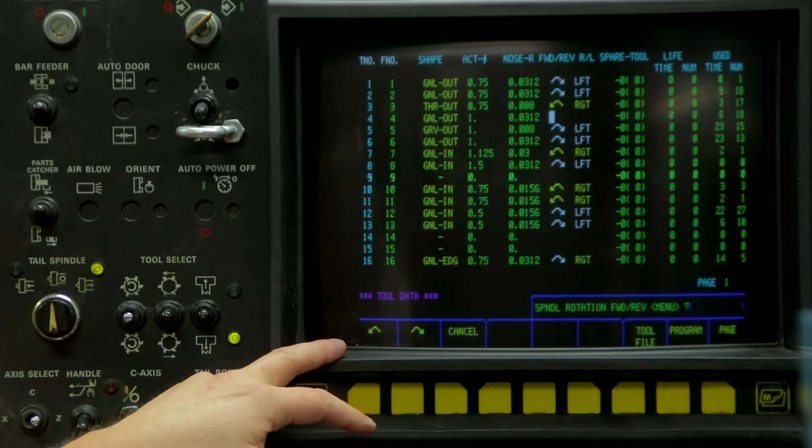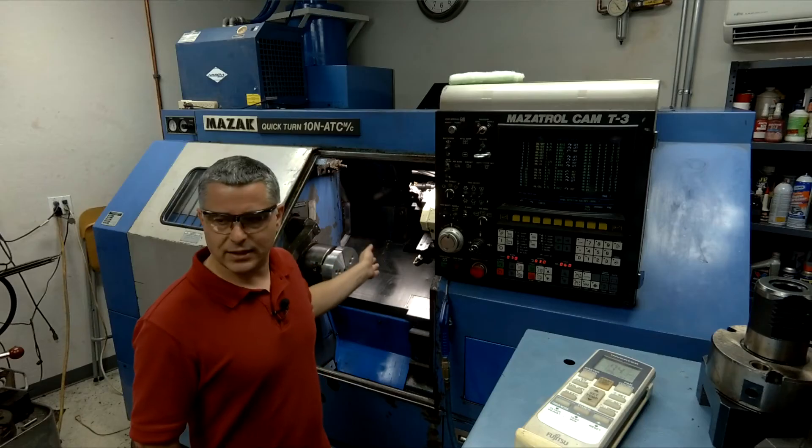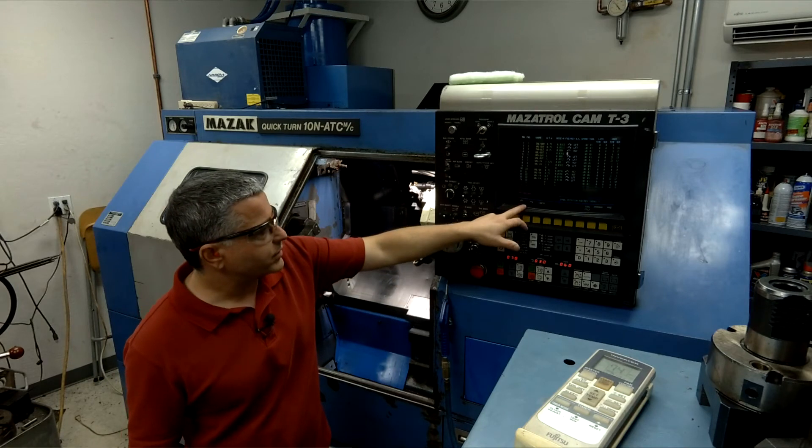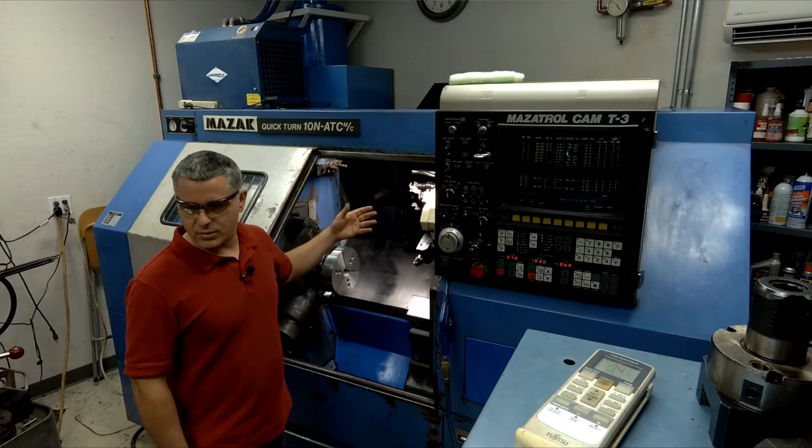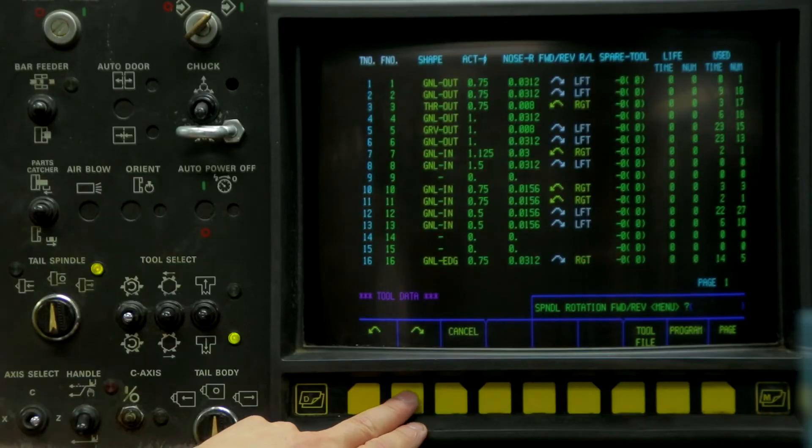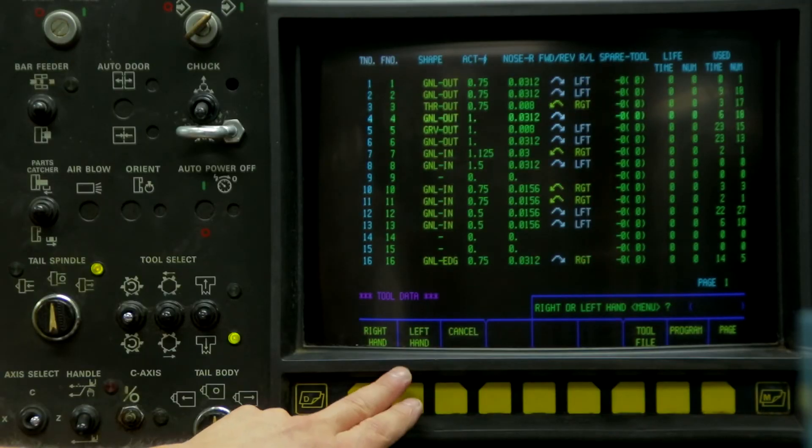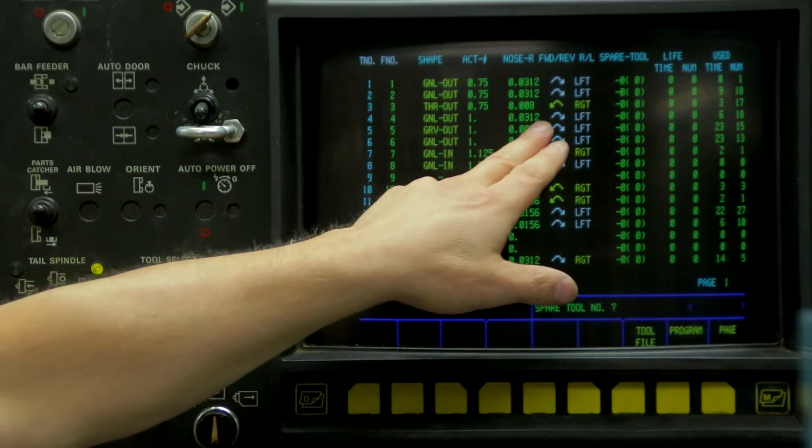And now this is the spindle rotation, forward or reverse. This is a left-handed tool, so I'm going to push this arrow, turn the chuck in the counter clockwise direction, or as most of you know, M04. So that's this arrow here. And then it's going to say it's a left-handed tool, and then our tool is described.